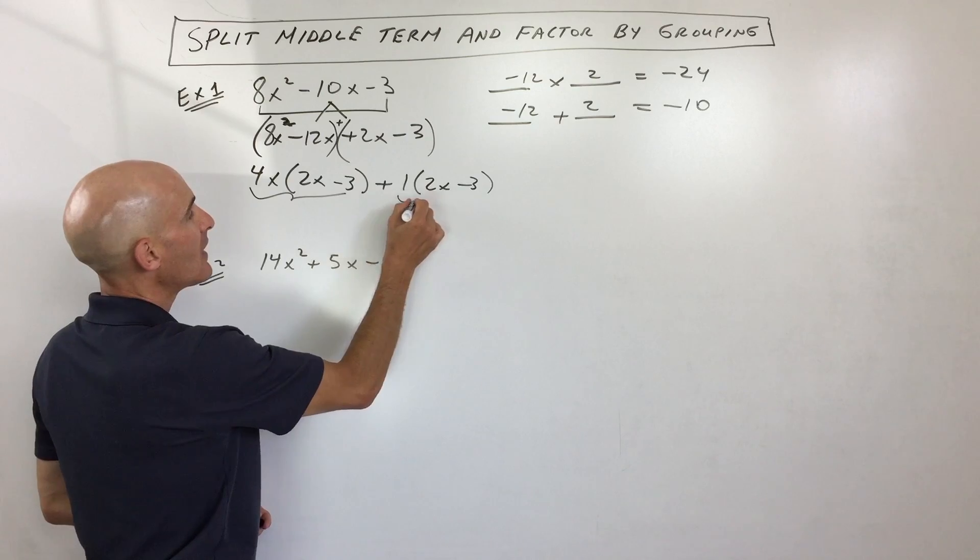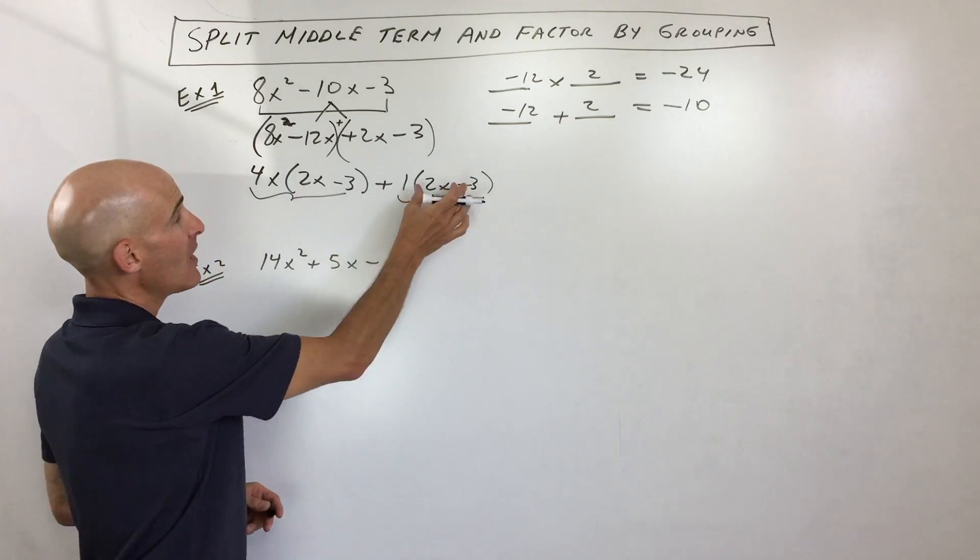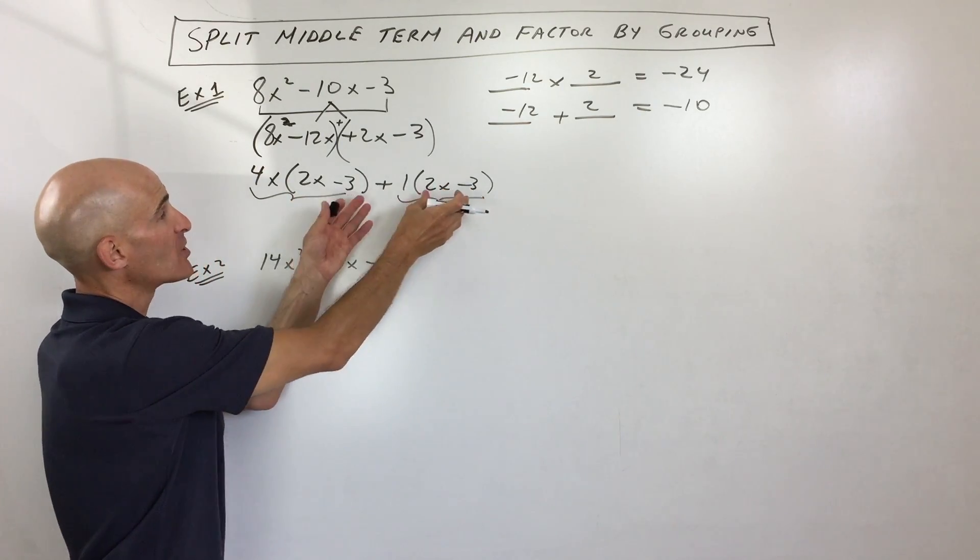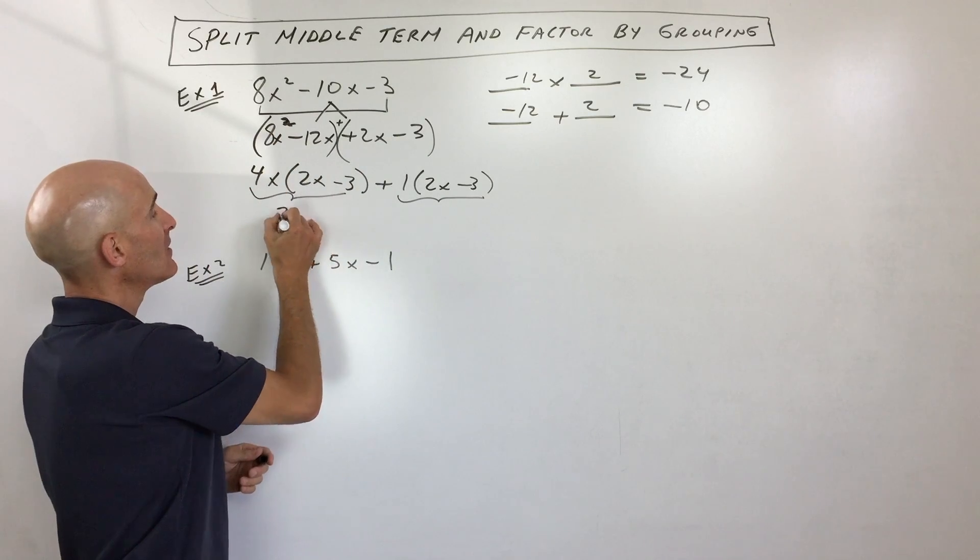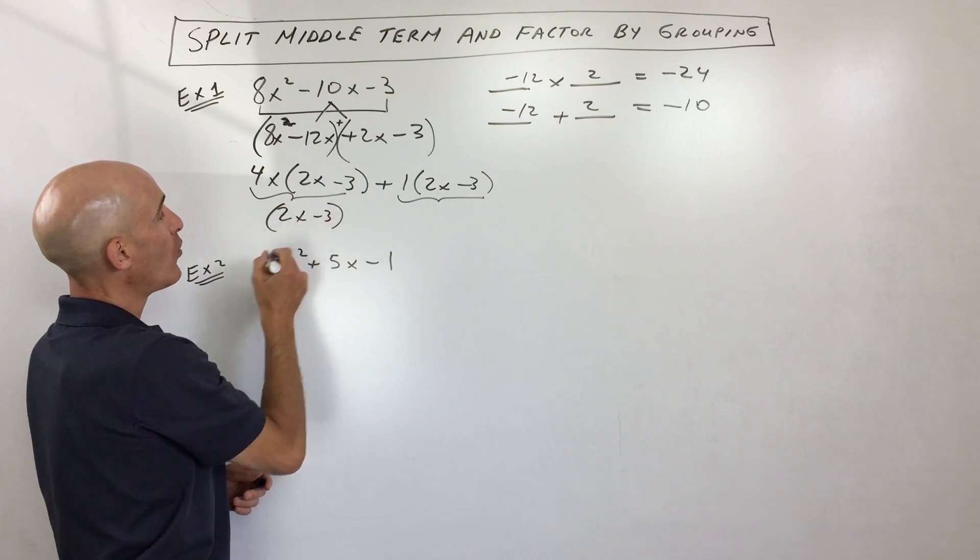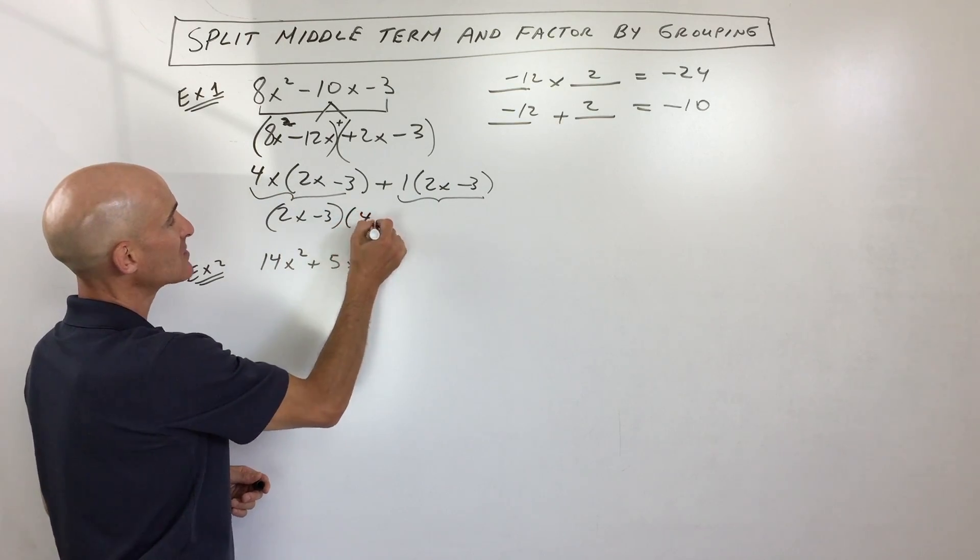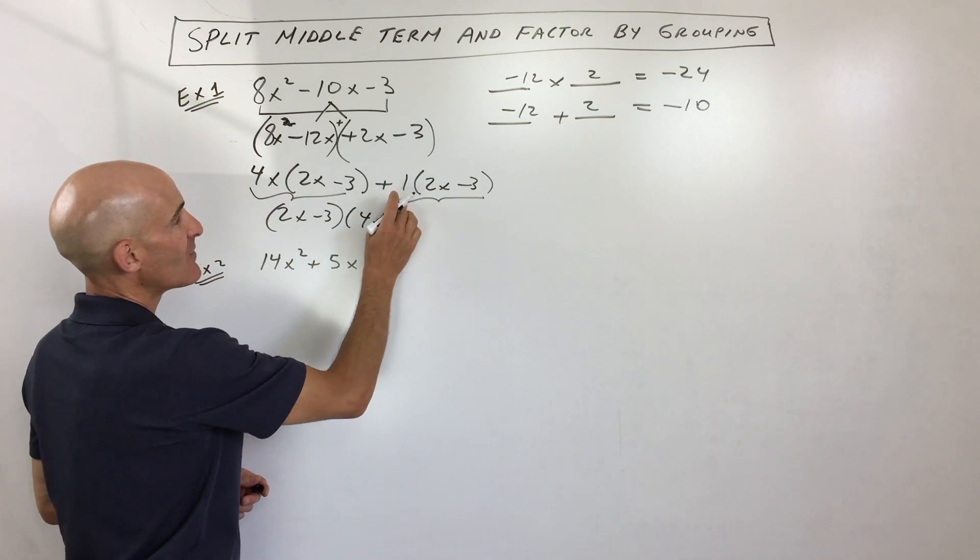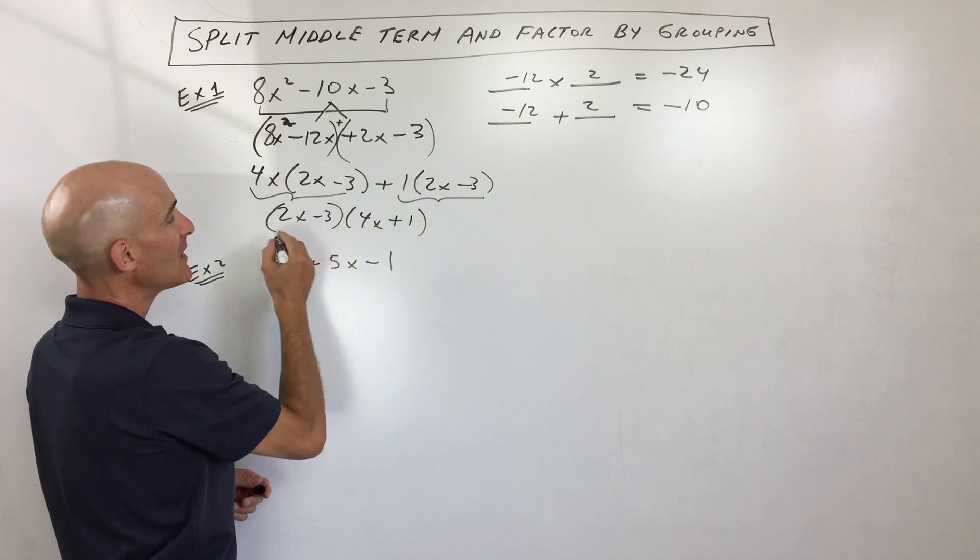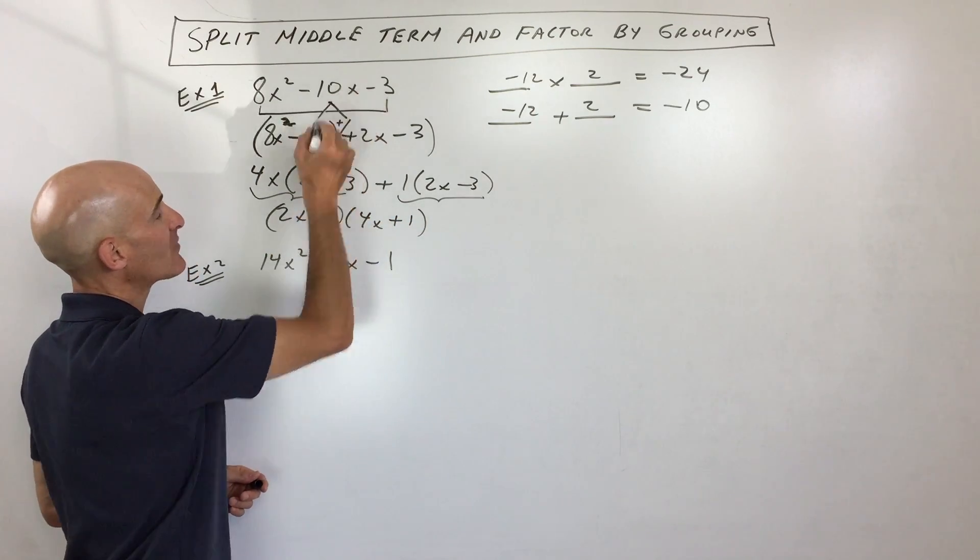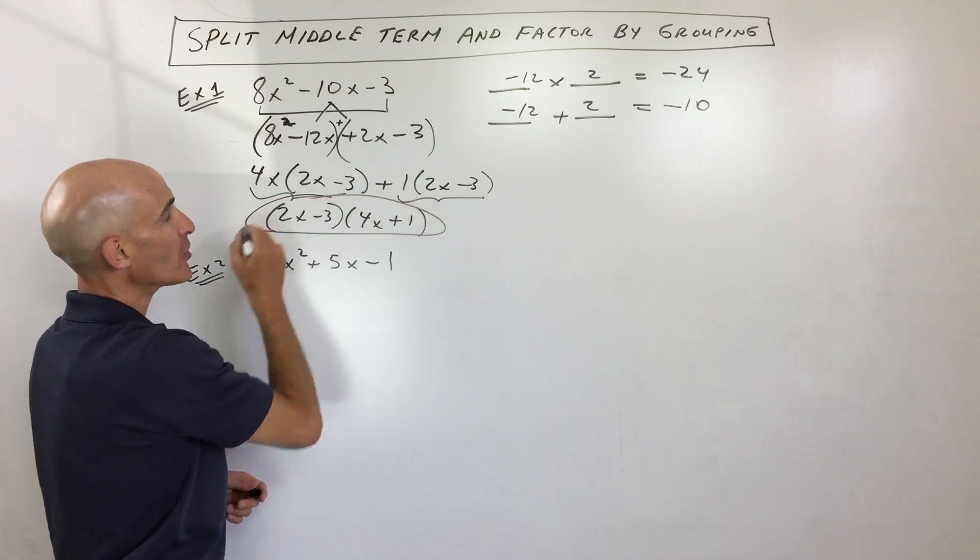Now notice out of this group and this group, what do they have in common? They have this 2x minus 3. So what we're going to do is we're going to factor it out as a greatest common factor, this whole thing. So we divide this whole thing by 2x minus 3, we're just left with 4x. If we divide this whole thing by 2x minus 3, we're just left with positive 1. If you foil all this out, you're going to get back the original trinomial.